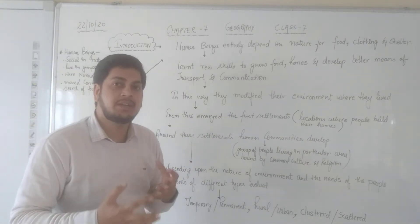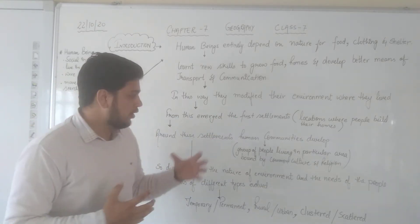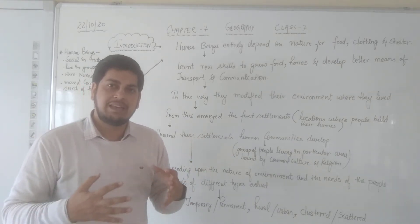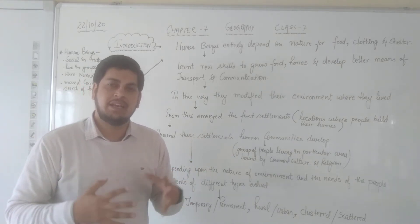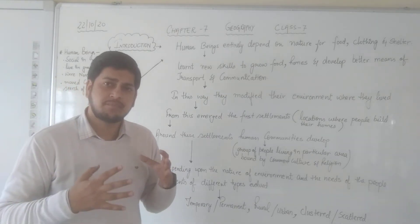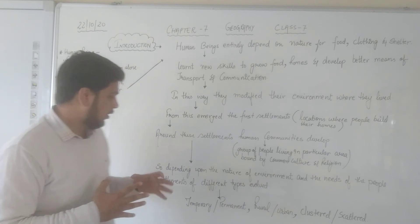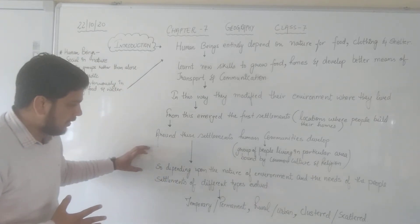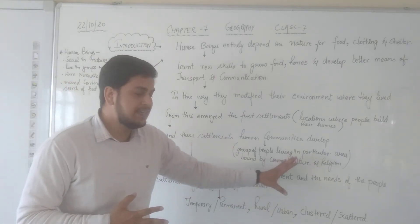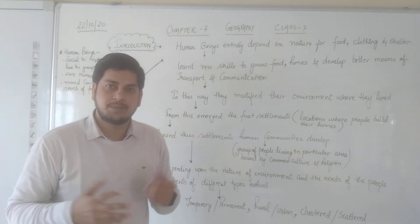Around these settlements, human communities developed. A human community is basically a group of people living together in a particular area, bounded by a common culture and religion. Now depending upon the nature of the environment and the needs of the people, settlements of different types evolved.